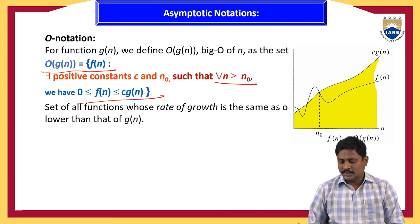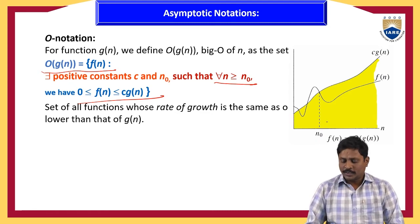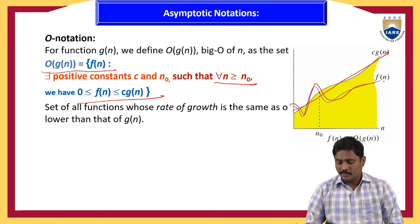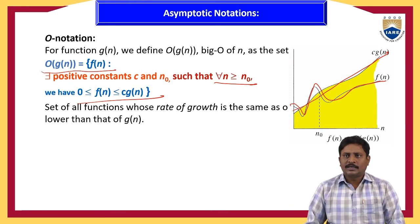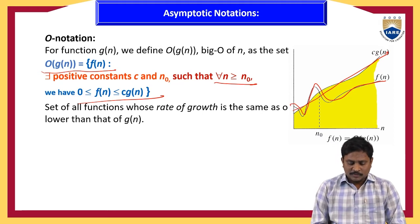Looking at the graph of big O notation, we observe that c·g(n) has a higher value than f(n). In most cases, c·g(n) is greater than or equal to f(n).